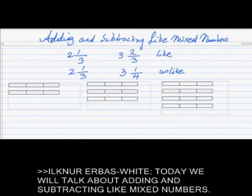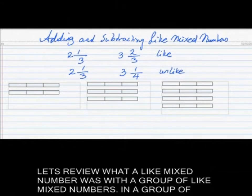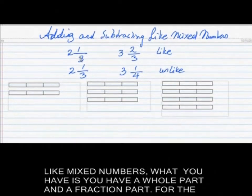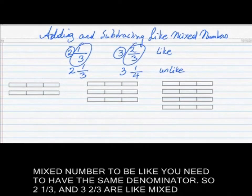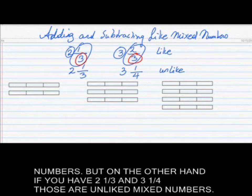Today we will talk about adding and subtracting like mixed numbers. Let's review what a like mixed number is. In a group of like mixed numbers, you have a whole part and a fraction part. For the mixed numbers to be 'like,' you need to have the same denominator. So two and one-third and three and two-thirds are like mixed numbers. But two and one-third and three and one-fourth are unlike mixed numbers.